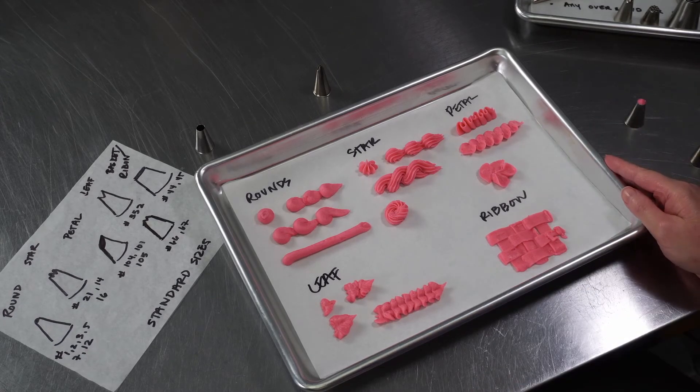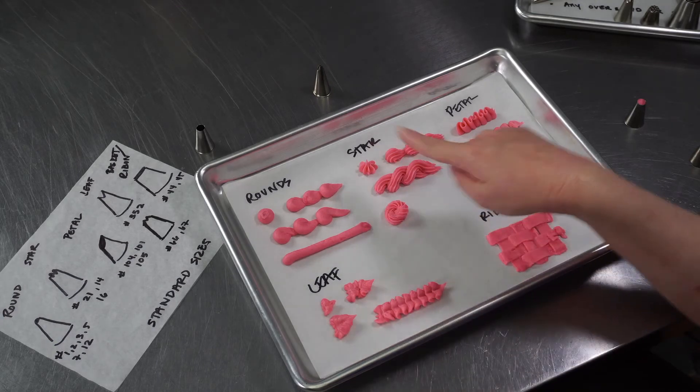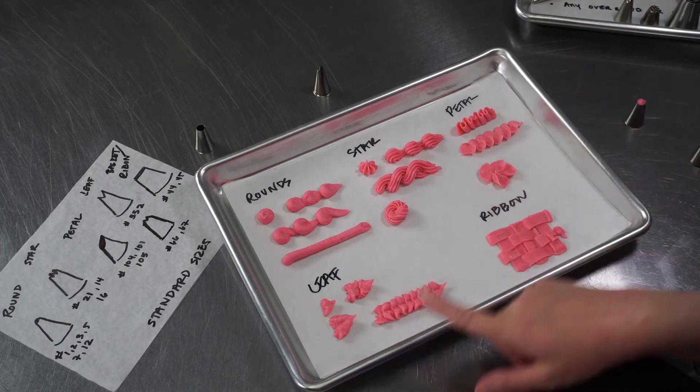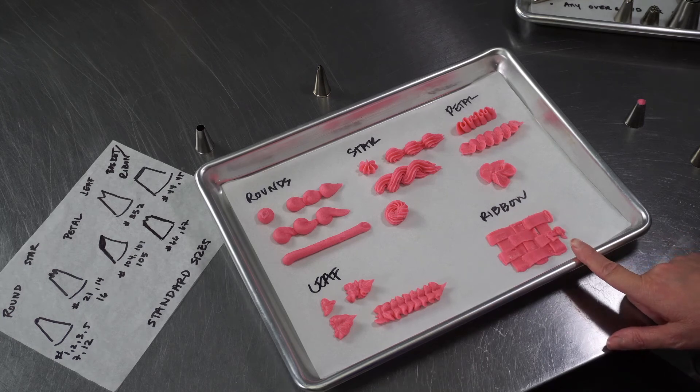So that's just a quick introduction to the five main categories that I would look for when I'm picking out a kit. You want to make sure it's got some rounds, some stars, a few petal tips, a leaf tip at least one, and a couple of the ribbon or basket weave tips.